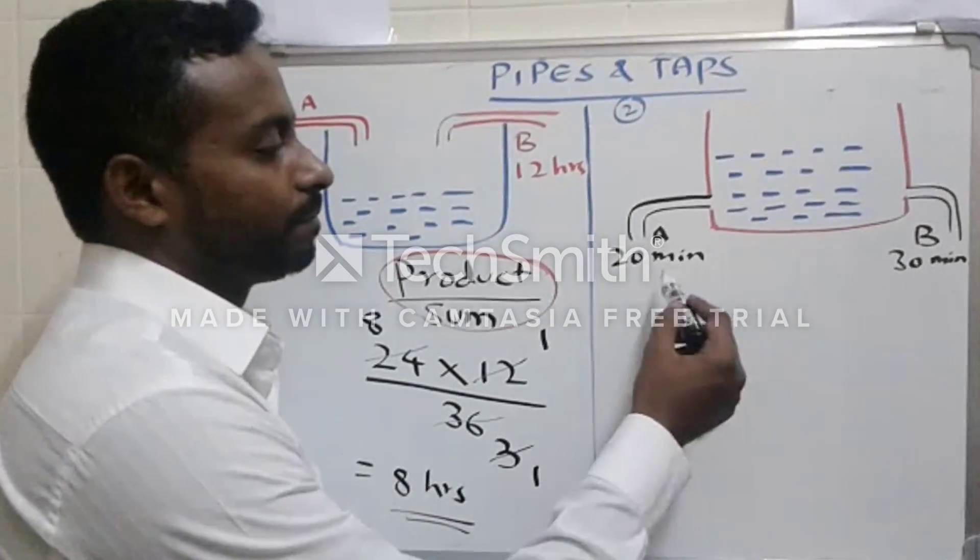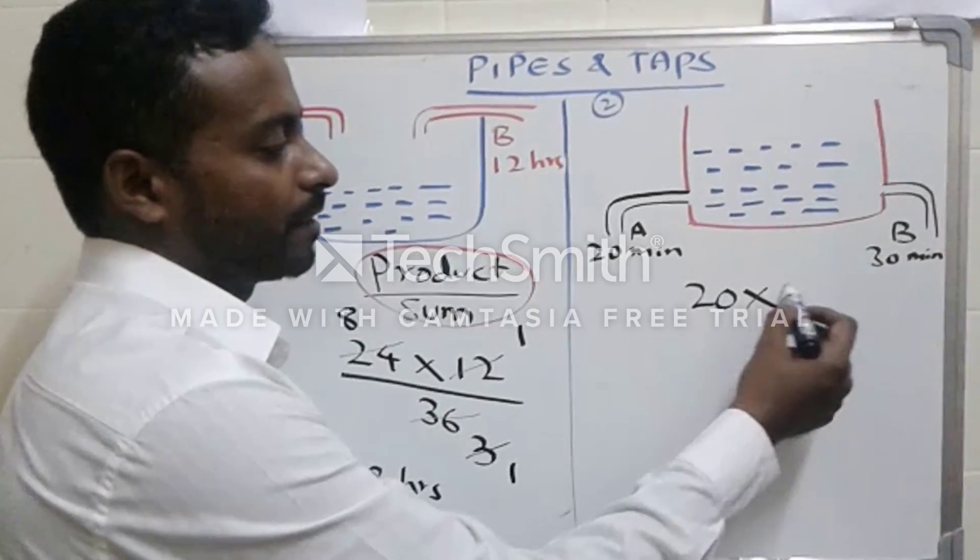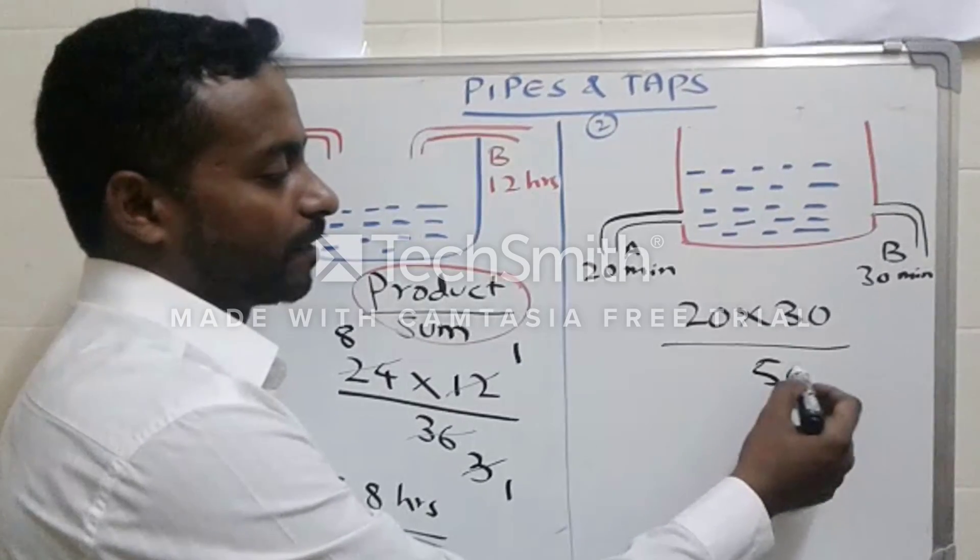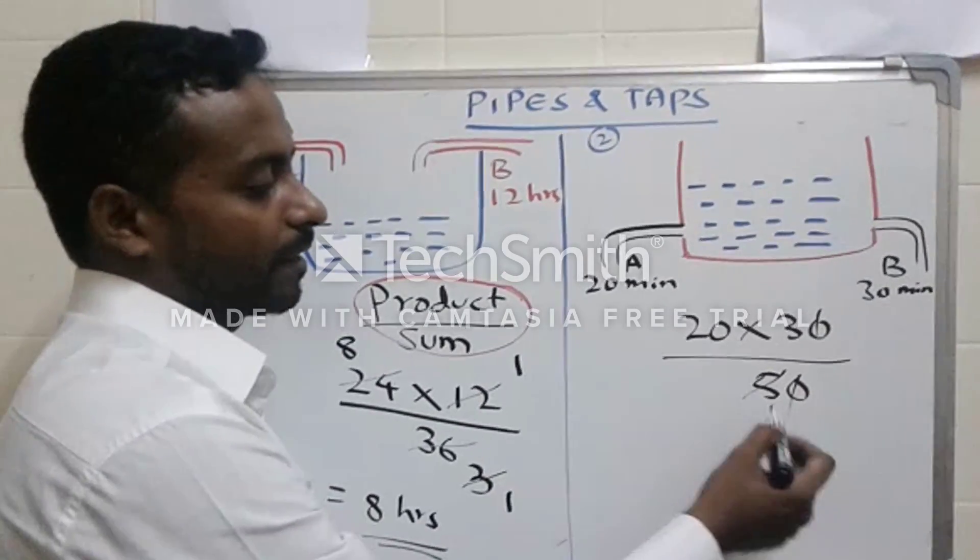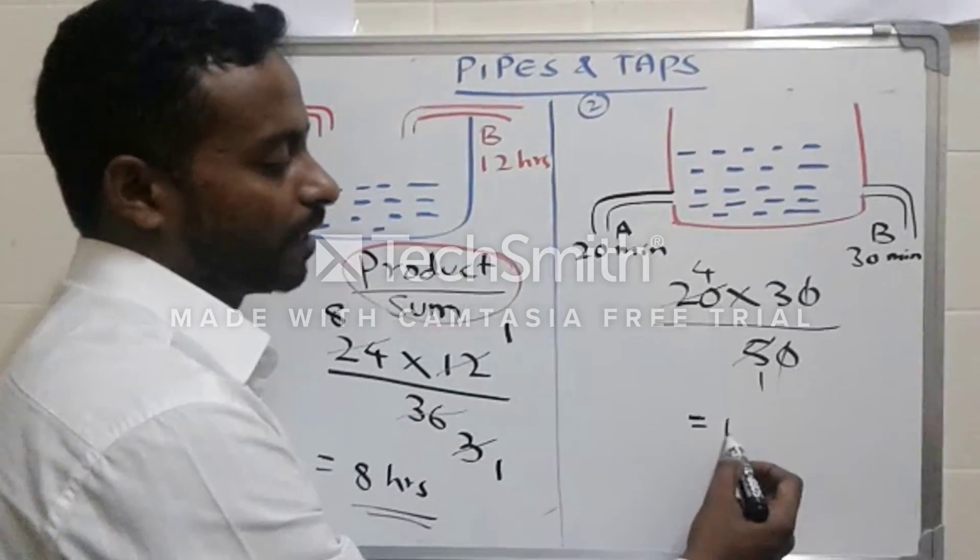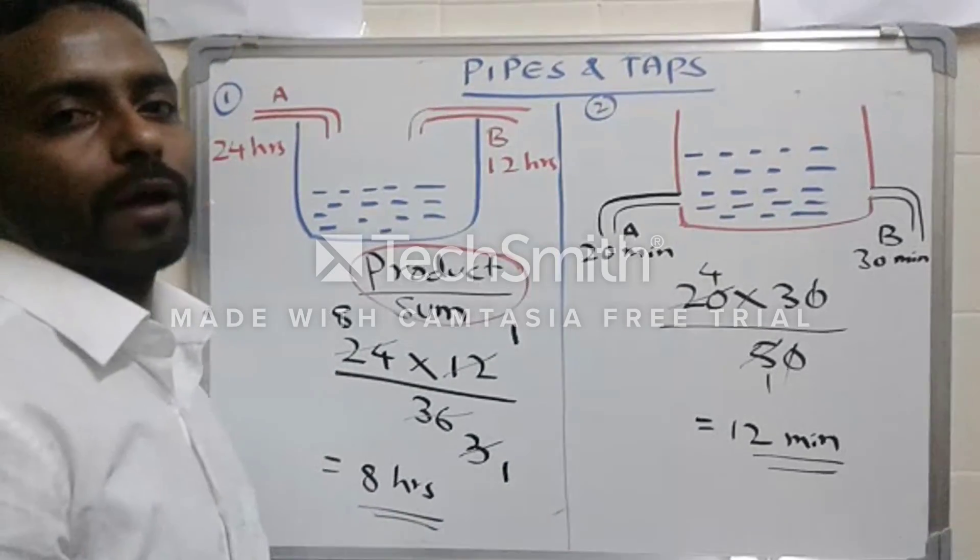20 minutes into 30, multiply it and divide by the sum, that is 50. Simplify the numbers: 5 times 1, 5 times 4, 4 times 3 will give me 12. And 12 minutes it will take to empty the tank when both the pipes run simultaneously.